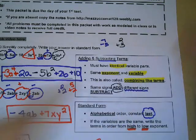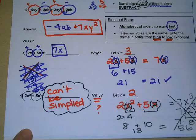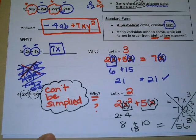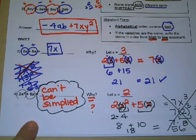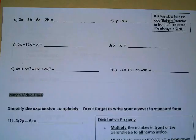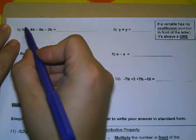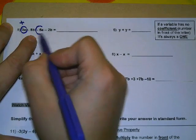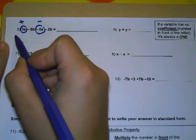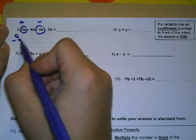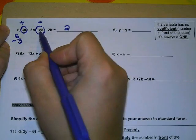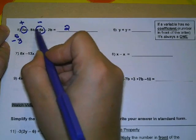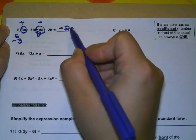Both variable and exponent must match. That's why you cannot combine terms where only the variable is the same. In example 5, we combine positive 3A with negative 5A. They have different signs, so we subtract: 5 minus 3 is 2, and since 5 is larger with a negative sign in front, we get negative 2A.